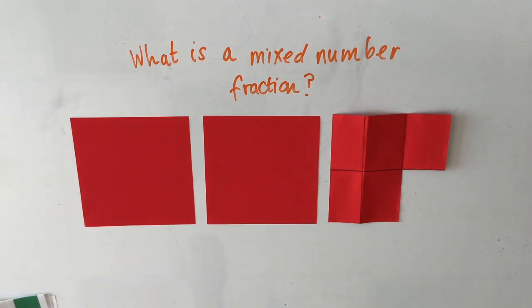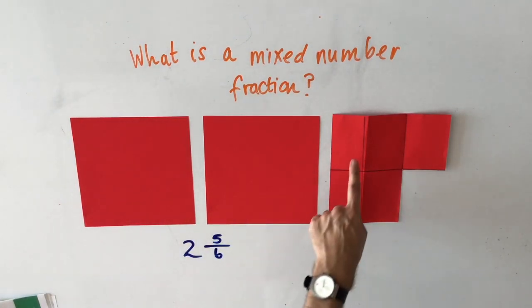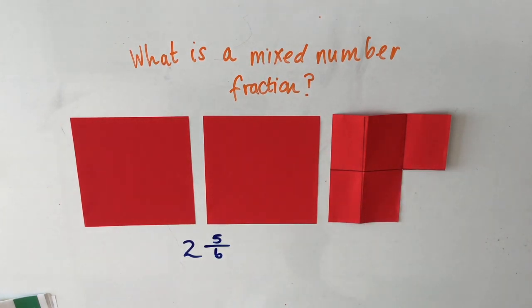So if we were to write this number down, we would say we've got two wholes and five sixths. We've got one whole here, we've got the second whole here and we've got one, two, three, four, five sixths there. This is a mixed number fraction because you can see the amount of wholes that we have and the fraction of the third piece of paper that's less than one.